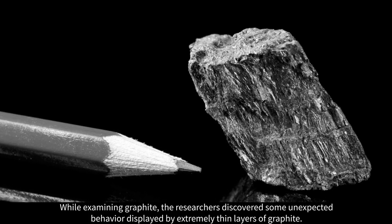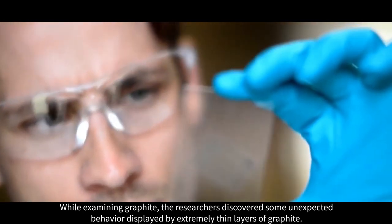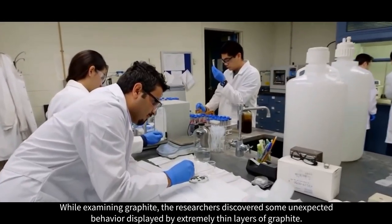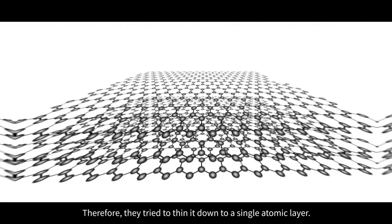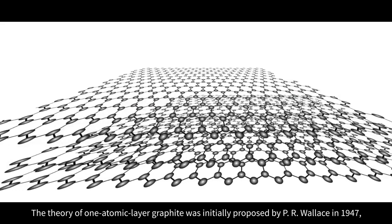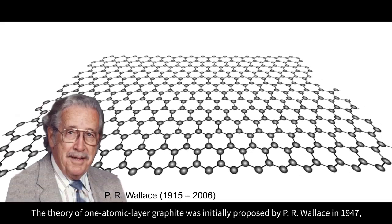While examining graphite, researchers discovered some unexpected behavior displayed by extremely thin layers of graphite. Therefore, they tried to thin it down to a single atomic layer. The theory of one atomic layer graphite was initially proposed by P.R. Wallace in 1947.